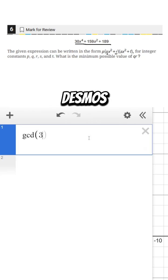Well we can come to Desmos and write 30, 159, and then 189 in a GCD list and it'll tell us if we can factor out three.